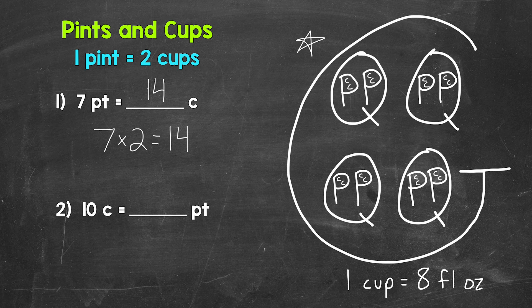Well, each group of two cups equals a pint. So how many groups of two cups in 10 cups? So we need to divide here. We need to do 10 divided by two. So when we go from cups to pints, we divide by two. 10 divided by two gives us five. 10 cups equals five pints.